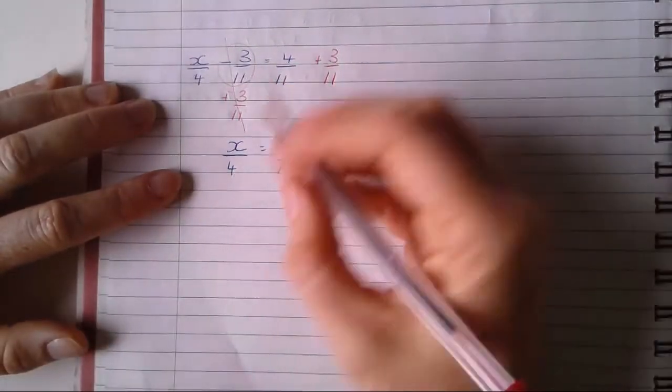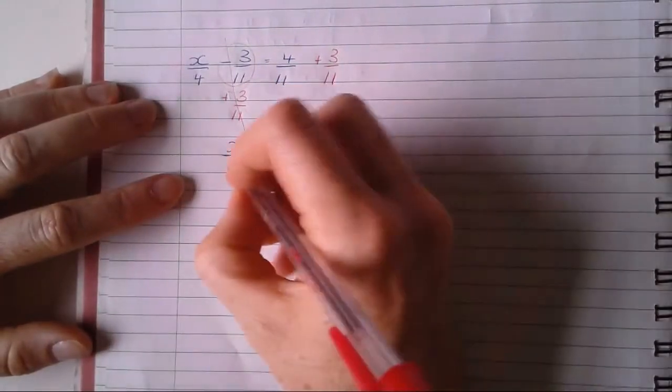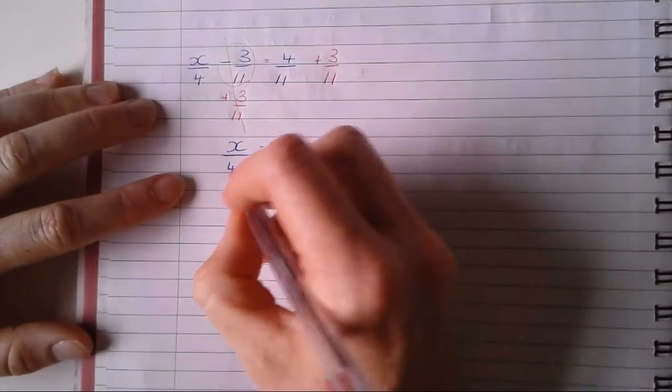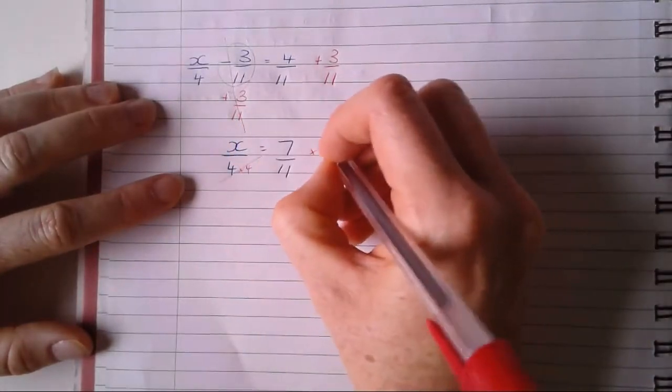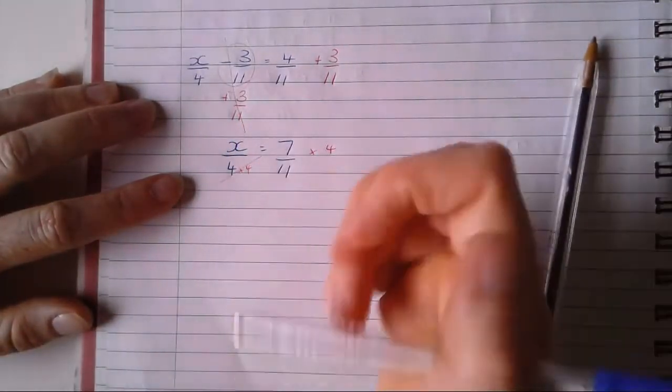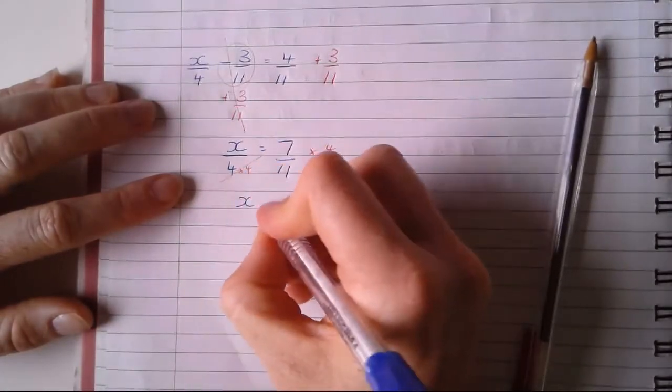Now I have a division, divide by four. So to reverse that, I need to times four on both sides. So rewrite my expression, my equation, sorry.